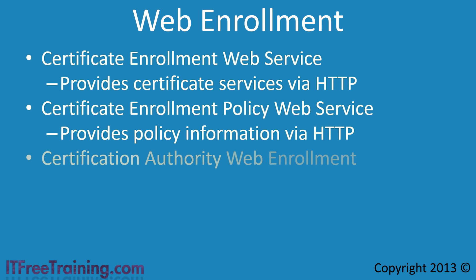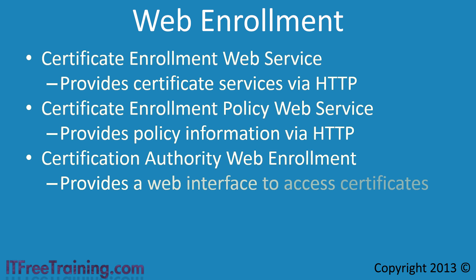The last component, Certification Authority Web Enrollment, provides a simple web interface that can be used to access certificates. For example, using the web interface a user could request a certificate to be generated on the CA. The key difference between this component and the previous two is that this component provides an actual web page for a user to access, whereas the last two components only use the HTTP protocol to communicate with the client.